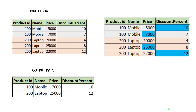Let's say we are getting an input file which contains product-related data, with the columns: product ID, name, price, and discount price. Within that, we are having duplicate records for multiple product IDs. In this case, we are having duplicate records for product ID 100 and 200. For product ID 100 there are 2 duplicate records, and for product ID 200, we are having 3 duplicate records.